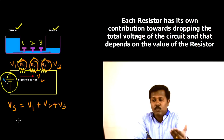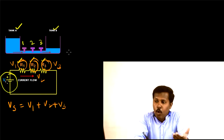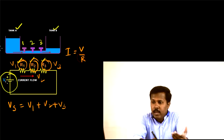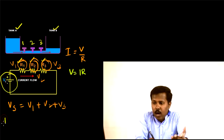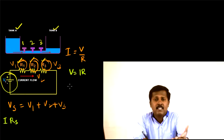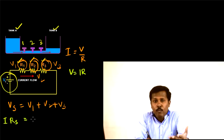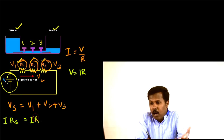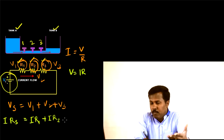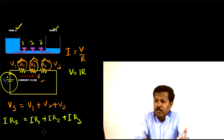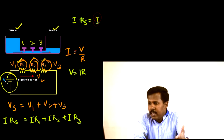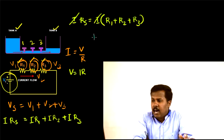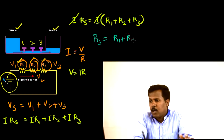So we can write the equation Vs = V1 + V2 + V3. From Ohm's Law, I = V/R, so we can write Vs = I × Rs, where Rs is the total effective resistance. Expanding the right side: I × Rs = I × R1 + I × R2 + I × R3. Taking I as common and cancelling it from both sides, we get Rs = R1 + R2 + R3.